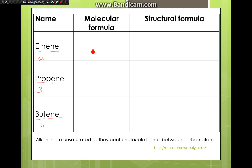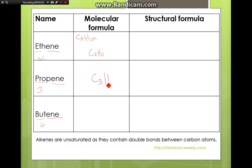Molecular formula: remember that the general formula is CnH2n. So for molecular formulas — if we have two carbons, we will have four hydrogens (C2H4). Propene: C3H6. Butene: four carbons, H8 — so C4H8.